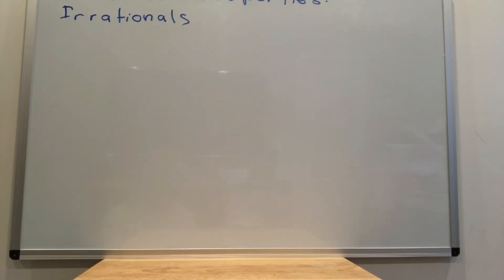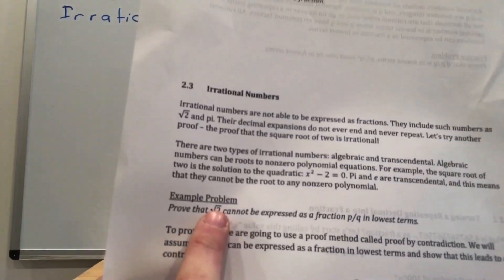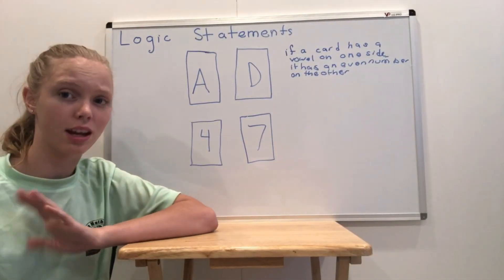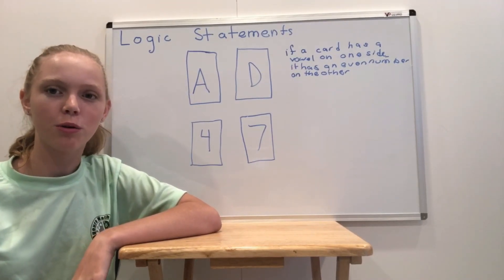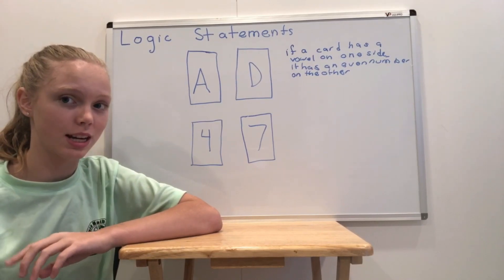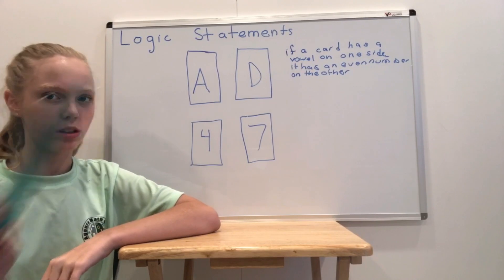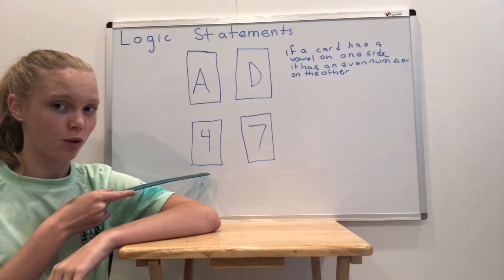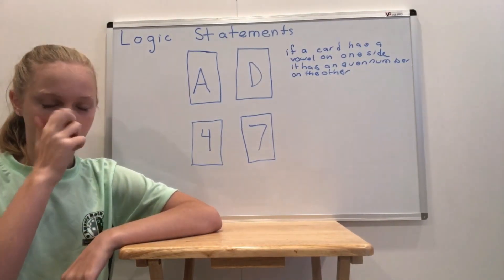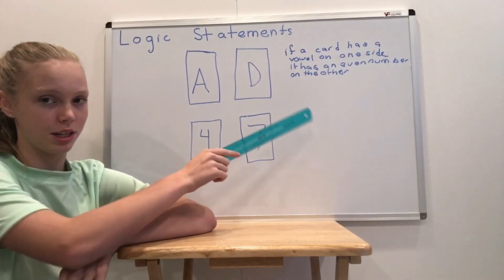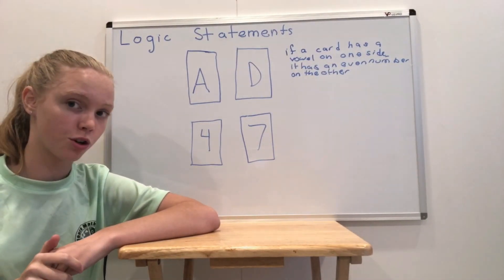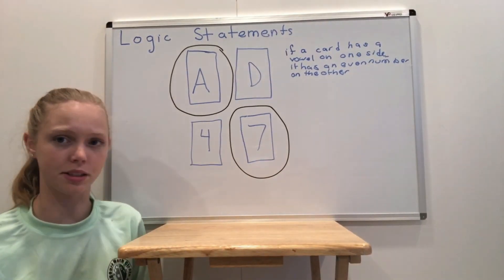There is a proof in your lecture notes that the square root of 2 is irrational. Read through the proof, then generalize it for the square root of any prime number, not just 2. The next topic is converse, inverse, and contrapositive. Let's start with a riddle: you're in a room with 4 cards, each guaranteed to have a letter and a number on it. Cards showing A and D have letters visible, and two cards show numbers. You are testing the statement: if a card has a vowel on one side, it has an even number on the other. Which cards do you have to turn over to guarantee this is true? The answer, surprisingly, is A and 7.